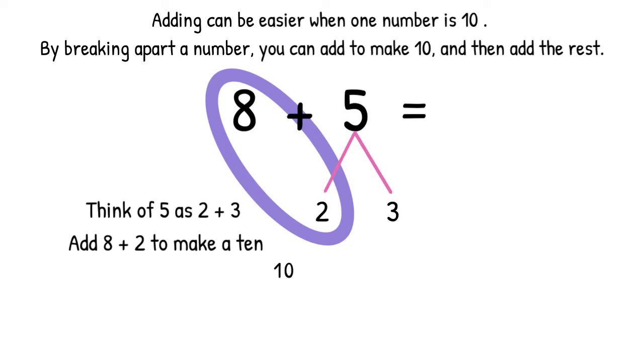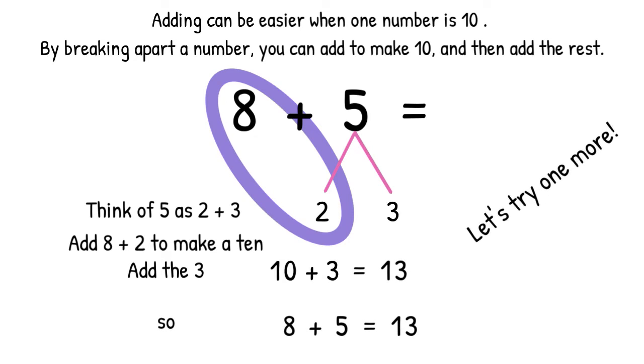Add 8 plus 2 to make a 10. Then add the 3. 10 plus 3 equals 13. So, 8 plus 5 equals 13. Let's try one more.